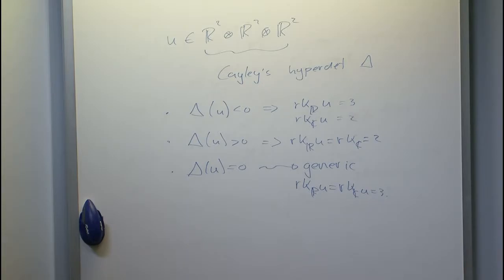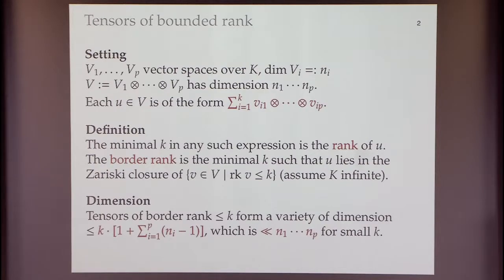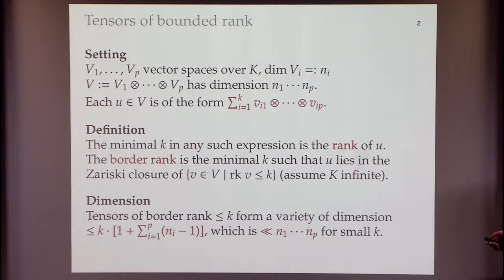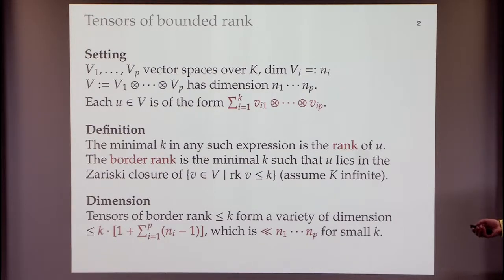The border rank takes away those two problems. It's the minimal K such that U lies in the Zariski closure of the set of all tensors of rank at most K. This takes care of both problems assuming K is an infinite field. If K is finite, the border rank equals the rank as defined this way, and it's still an interesting notion.